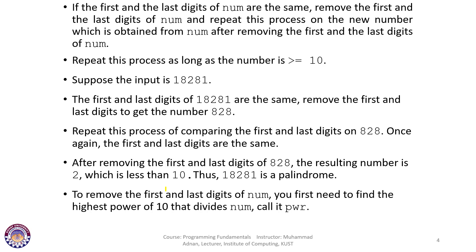Let us see an example. Suppose the input is 18281. Reading it forward: 1-8-2-8-1. Reading it backward: 1-8-2-8-1. So this is a palindrome.